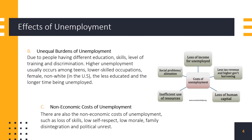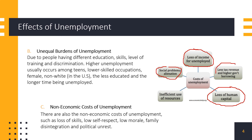Here are some other effects of unemployment. Loss of capital is related to the GDP gap explained earlier, which is also related to loss of income for those who are unemployed. Social problems can be related to the non-economic costs. When many people aren't working, they don't pay taxes, so it involves higher government borrowing. And of course, when people are not working, there is underutilization or inefficient use of labor resources.